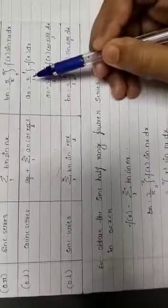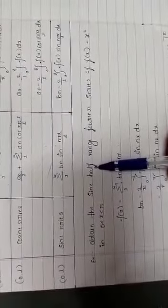As per the table, for 0 to L take this function and this is the sine half range Fourier series. Take the sine series.